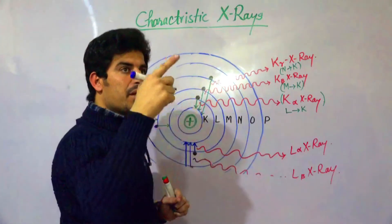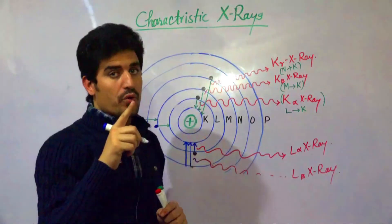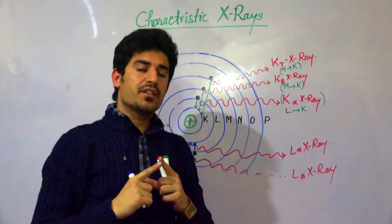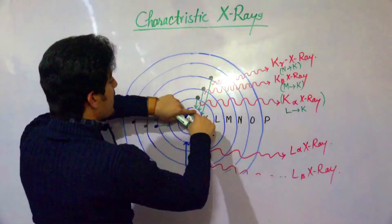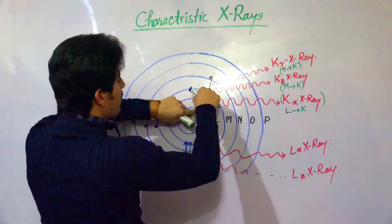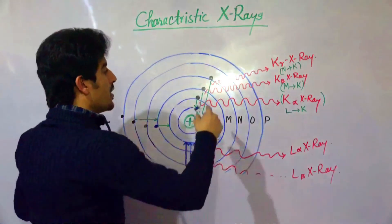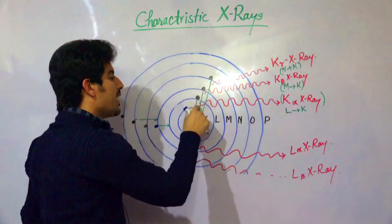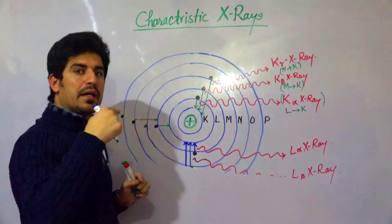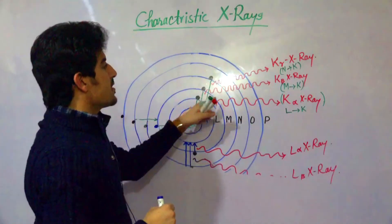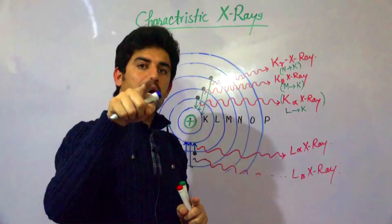The K-alpha X-ray has higher wavelength and lower energy because the electron travels a shorter distance from L to K. In contrast, K-beta X-ray — where the electron comes from the M-shell — has a greater energy difference, resulting in lower wavelength and higher energy. Therefore, K-beta X-ray is more energetic than K-alpha X-ray.